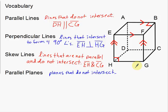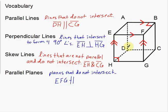For this example, I'll use the front face — points E, F, G, H — and the back face. Note that dotted lines represent the edges we can't see. I only need three points to define a plane, so I'll use E, F, G for the front face. The back face is A, B, C, D, so I'll use A, B, and C. Plane EFG is parallel to plane ABC — those are the front face and back face of our cube.